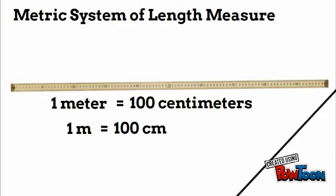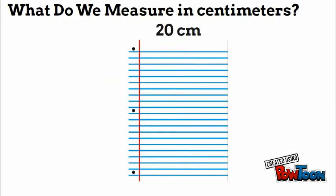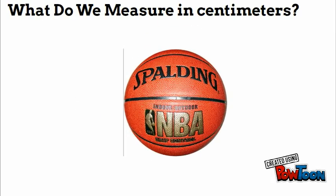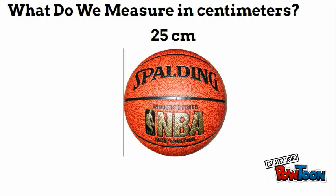Centimeters are a smaller unit of measurement. Normal size paper is about 20 centimeters wide, 28 centimeters long. A basketball is about 25 centimeters wide. A stapler, most staplers, are 10 to 15 centimeters long.